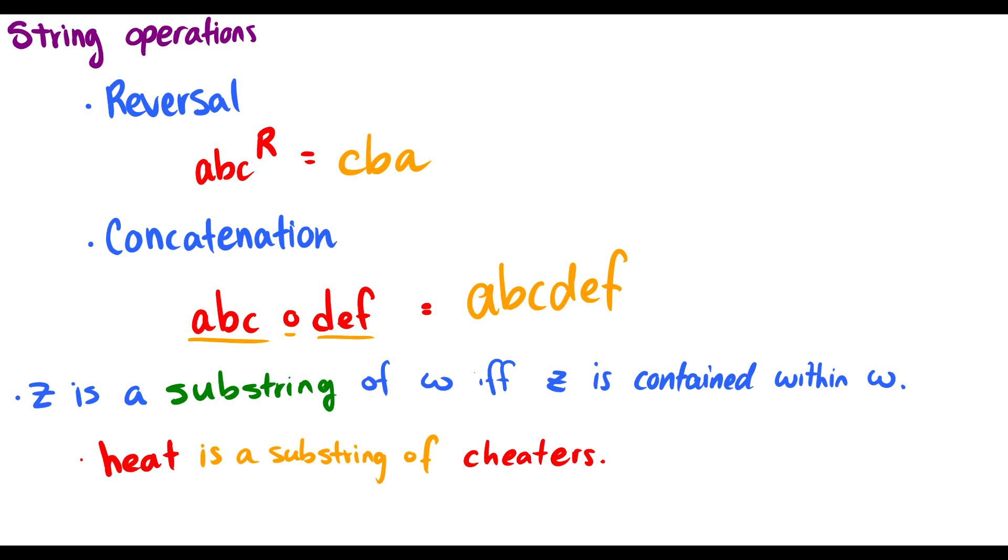We also have this notion of substring. We say Z is a substring of W if Z is contained within W. For instance, heat is a substring of cheaters because we see heat right here. Note, this must be side by side. This whole thing must appear as a whole unit in the string.